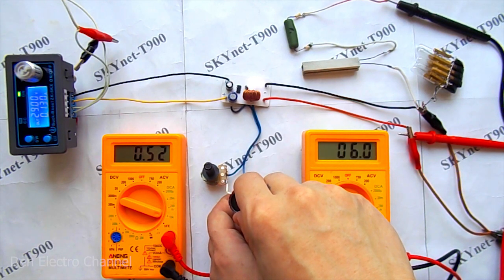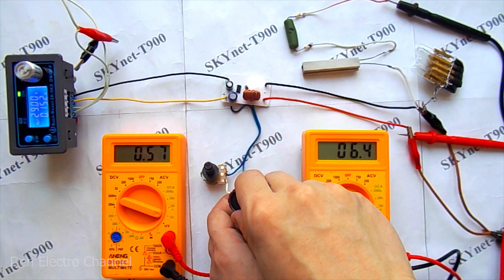Slowly turn the regulator to increase the voltage. When the voltage reaches almost 7 volts, the converter turns off.